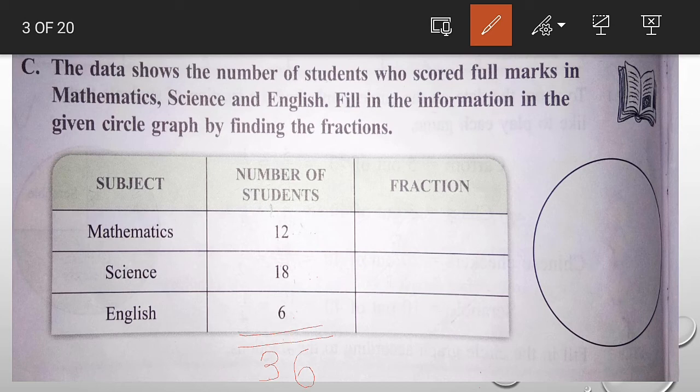Now in mathematics, number of students is 12, so to find its fraction what do we do? 12, denominator will be 36. In 12's table, where does 36 come? 3 times, right? So numerator is 1 and here is 3. So 1 upon 3.